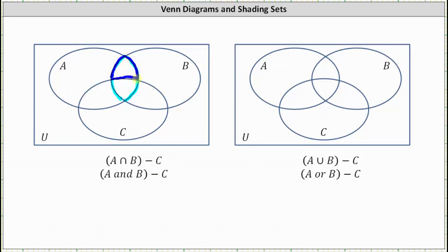Let's erase the light blue and shade the dark blue. This region represents the set A intersect B minus C, meaning the set of elements that are in A and B which are not in C.